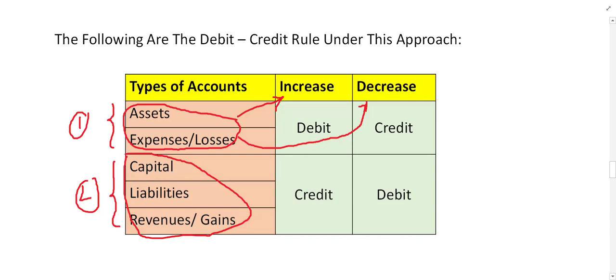Group 2 consists of capital, liabilities, revenue, and gain. This group is the opposite of Group 1. If this group increases, the accounts become credit, not debit. If these accounts decrease, we call it debit. This is the accepted standard in accounting: an increase in capital, liability, and revenue is called credit; a decrease is called debit.